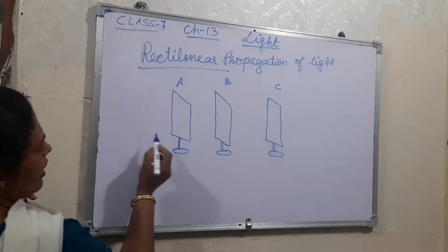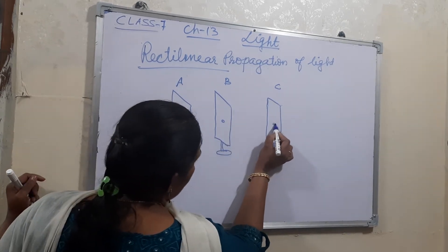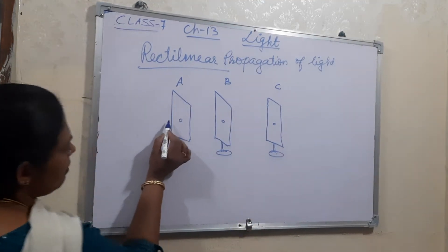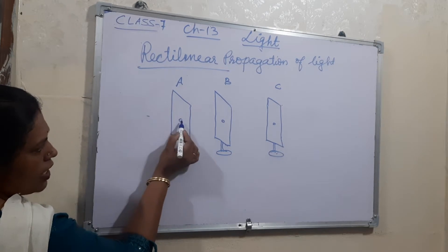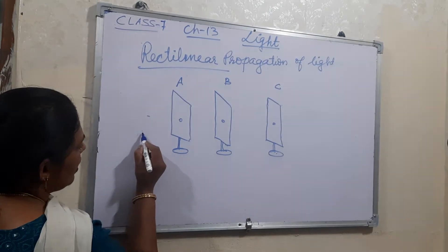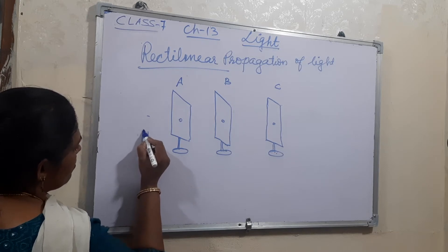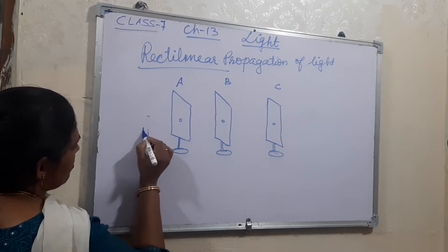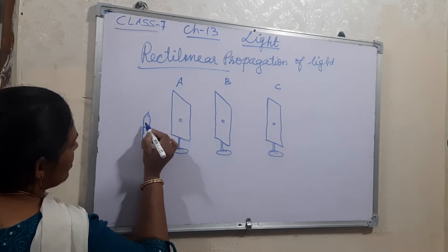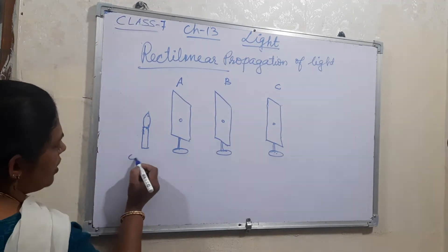Then make one small hole in the middle of each cardboard — the same hole position in all three. Just opposite to that, keep a candle. So here I am keeping the candle, and the candle's flame should be aligned so that it will move through this hole. Adjust it in that way.